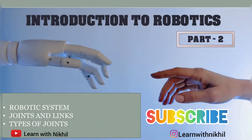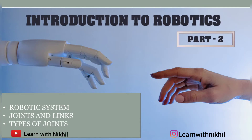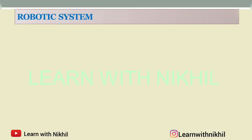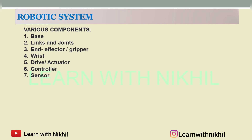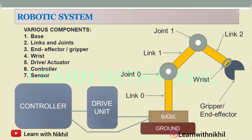Hello and welcome back to my channel, Learn with Nikhil. This is my second lecture on Introduction to Robotics. In this video we'll study the robotic system and the different joints and links in the robot. The robotic system consists of various components like base, links and joints, end effector or gripper, wrist, drive or actuator, controller, and sensor. Here you can see the basic robot structure, which I'll explain in detail.